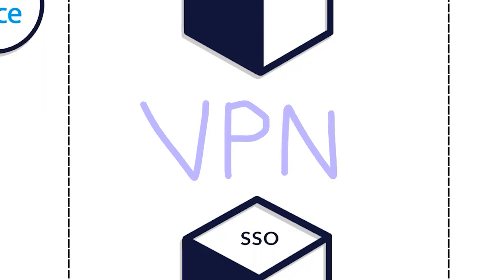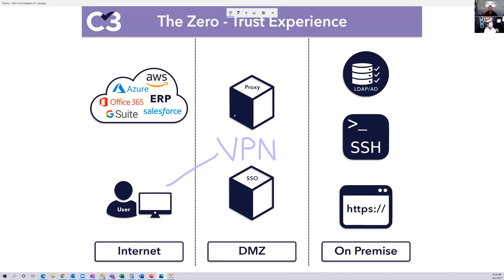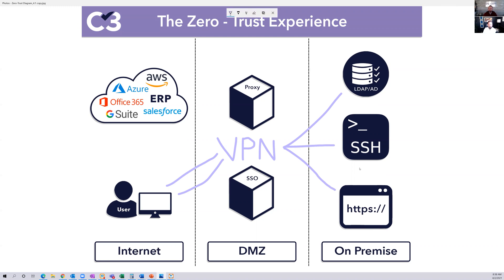Typically, what you would do is, as your user — whether you're using AD or some other kind of authentication — it would send you back an IP address. That's when the VPN would allow you to connect to any of these apps on your internal network. The challenge with this, though, is once you're in, you're in. You could go from this app to this app, or to other ones we don't even have listed here.